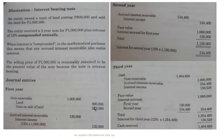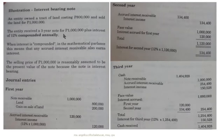Since it is compounded annually and the problem does not state that installments will be received regularly, we do not divide the 1,000,000 by 3. This is considered a term note — meaning a lump sum payment at the end of three years, not a series of periodic payments.